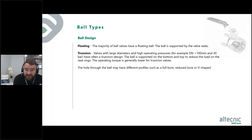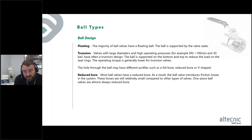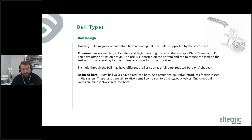The hole through the ball can have different profiles: full bore, reduced bore, or V-shaped. A reduced ball is quite common on entry-level valves — most ball valves have a reduced ball and as a result introduce some friction losses into the system, though these losses are still relatively small compared to other valve types. One-piece ball valves are almost always reduced bore. The bore is smaller than the pipe, which causes a step-down effect and can affect flow.